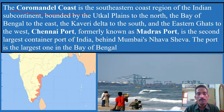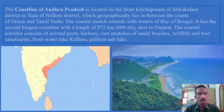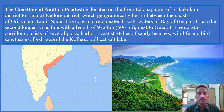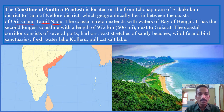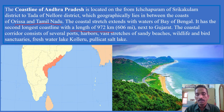The coastline of Andhra Pradesh extends from Ichapuram of Srikakulam district to Tada of Nellore district, geographically between the coasts of Odisha and Tamil Nadu. This coastal stretch borders the Bay of Bengal and has the second largest coastline in India at 972 kilometers, next to Gujarat. The coastal corridor includes several ports, harbors, sandy beaches, wildlife sanctuaries, and freshwater lakes like Kolleru and the saltwater Pulicat Lake.